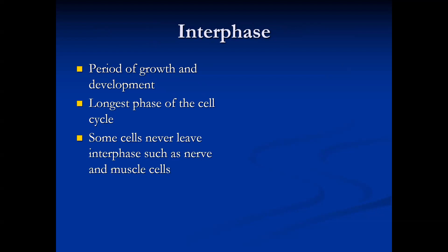Some cells never leave interphase — such as nerve cells and muscle cells. Brain cells, for example, grow not by increasing their number but by enlargement. Nerve cells, muscle cells, and cardiac cells are the kinds of cells that do not divide. The number of brain and muscle cells you have is the same as when you were born, because they are not dividing.